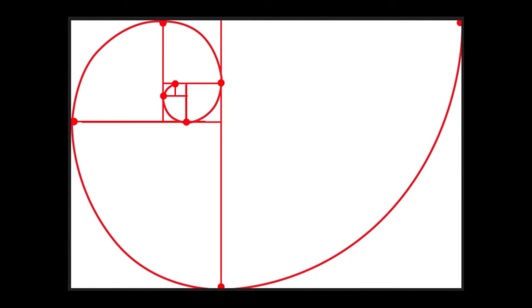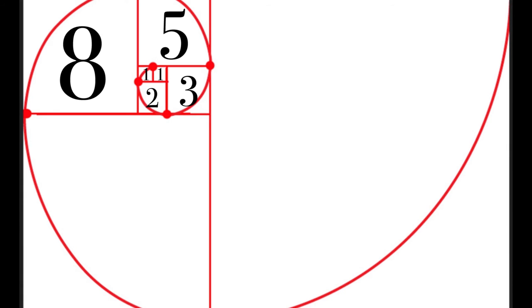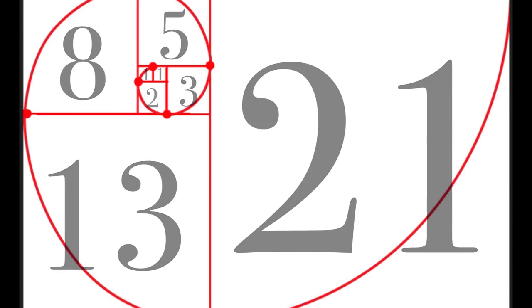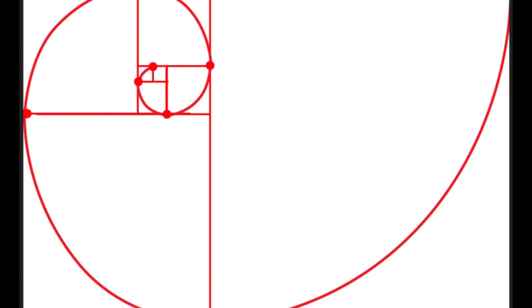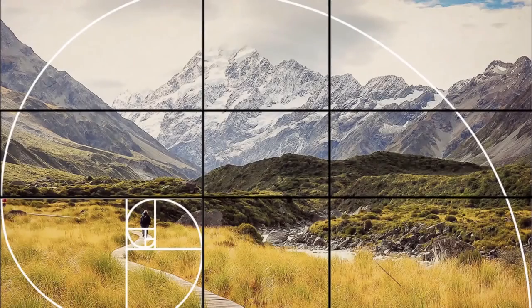You take a 1×1 square and place it next to another 1×1 square. Next to that you put a 2×2 square, then a 3×3, 5×5, 8×8, 13×13, 21×21. With these squares together you get the golden spiral.